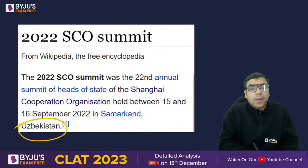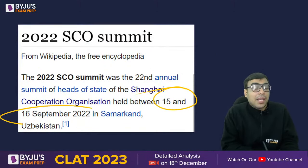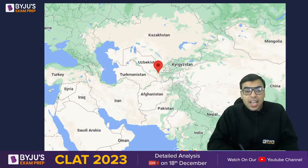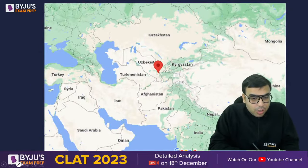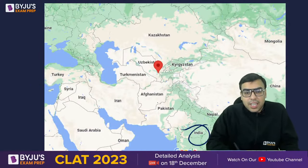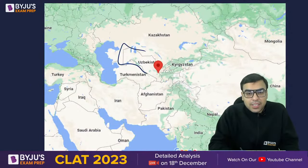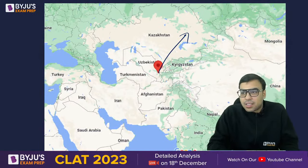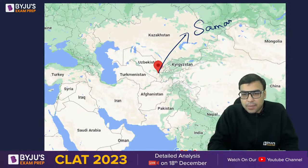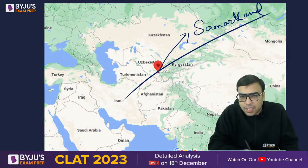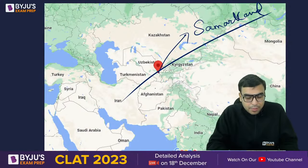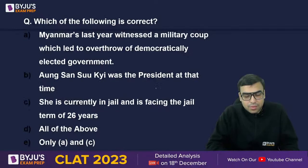The SCO summit happened in Samarkand, Uzbekistan on 15th–16th September — they may ask the date also. Here is India, this is Uzbekistan, its capital is Tashkent, and Samarkand is a separate city — not the capital. Just have an idea about it.